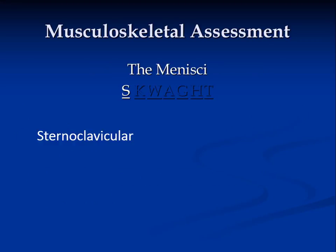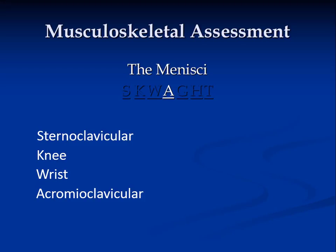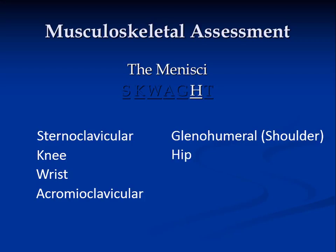A mnemonic to help remember the locations of the menisci is SQUAT: Sternoclavicular joint, Knee, Wrist, Acromioclavicular joint, Glenohumeral joint, Hip, and Temporomandibular joint.